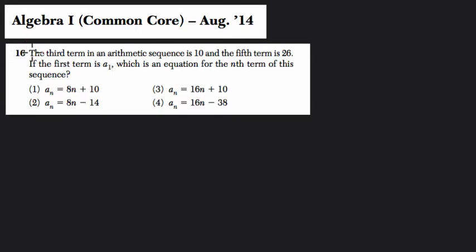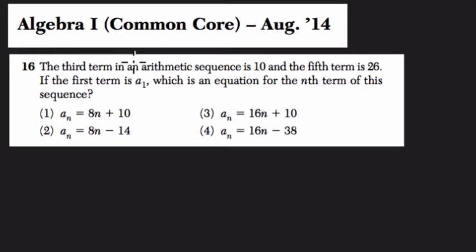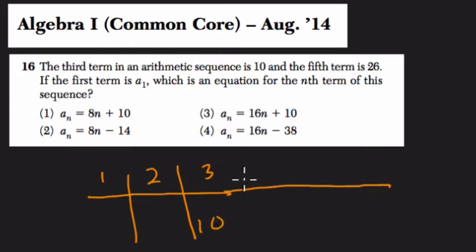So this problem is set up and it tells us that the third term in an arithmetic sequence is 10. So our third term, I'm going to space this out, we have some first term, I'll put here, second term, we don't know it yet, our third term is 10. And the fifth term is 26, so fourth, fifth.